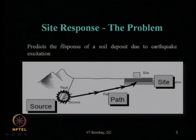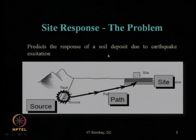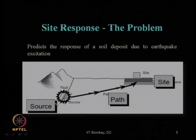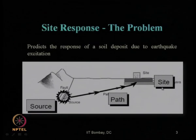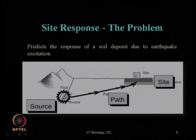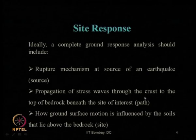We have mentioned how the problem of site response is defined — it is the prediction of the response of a soil deposit due to earthquake excitation. In that process, we have seen there are three major phases: source, path, and site. The source of the earthquake, the path through which it travels, and the site or surficial layer close to the ground surface — what will be the behavior there. That site response or ground response we want to learn in detail.